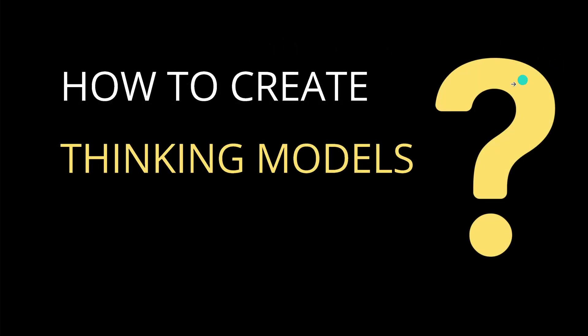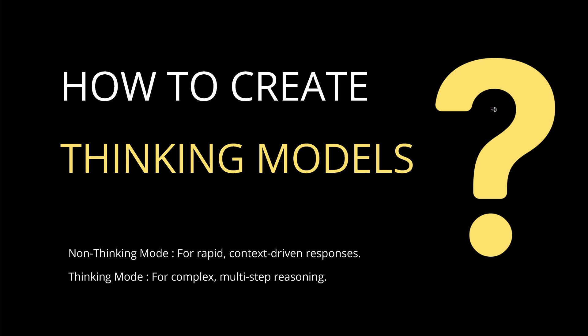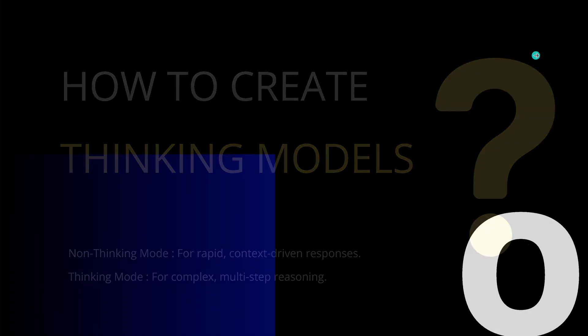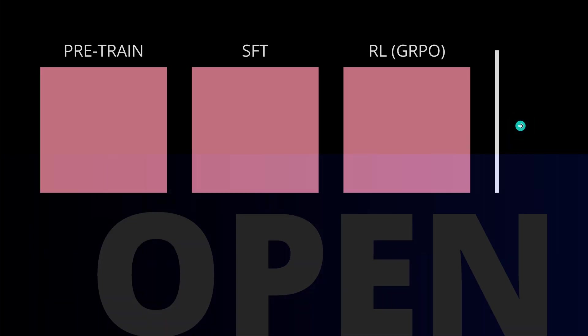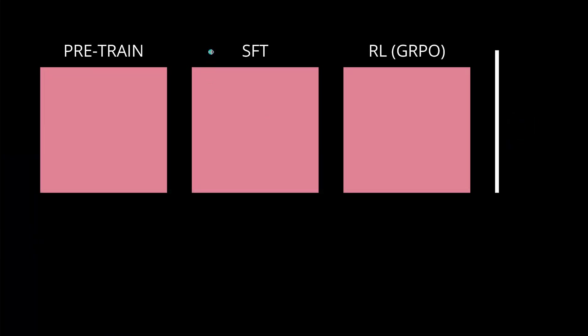The main question today: how to create thinking models - thinking mode for complex multi-step reasoning and non-thinking mode for rapid context-driven immediate responses by our LLM. Let's open up the video. You remember the classical training process: we have pre-training, supervised fine-tuning, reinforcement learning with GRPO or PPO methodology, and then inference.